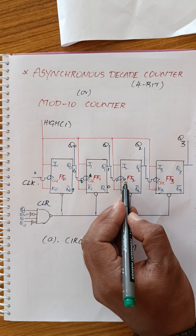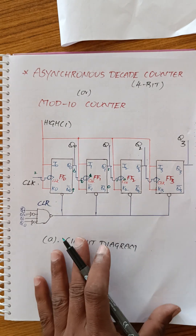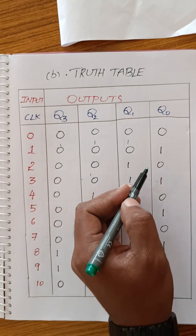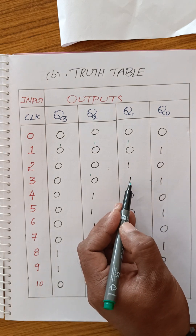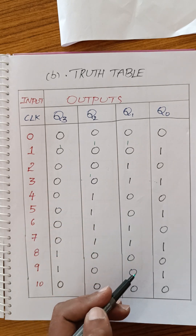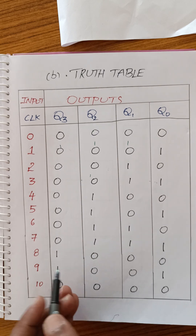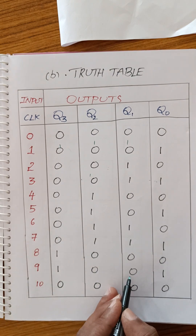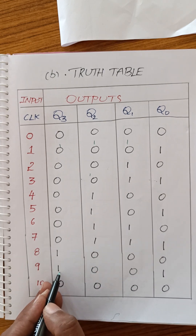For the third flip-flop, the output of the second flip-flop going from 1 to 0 has a bubble (inversion), so the clock to the third flip-flop is 0 — meaning the third flip-flop is off. It maintains its previous state. The fourth flip-flop also maintains previous state. This process continues for each subsequent clock pulse up to the 9th clock pulse.